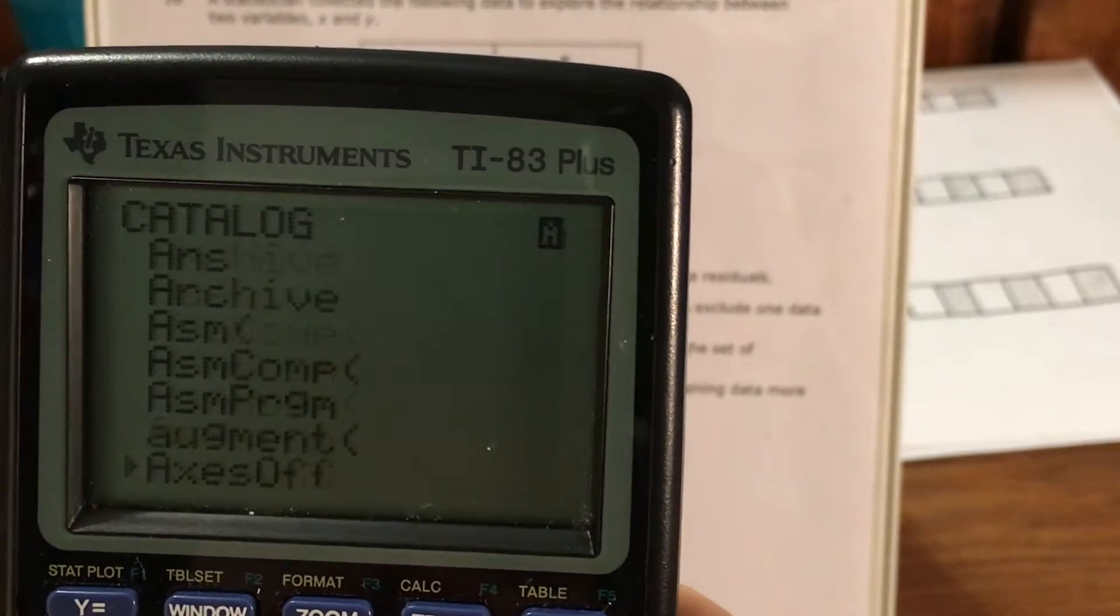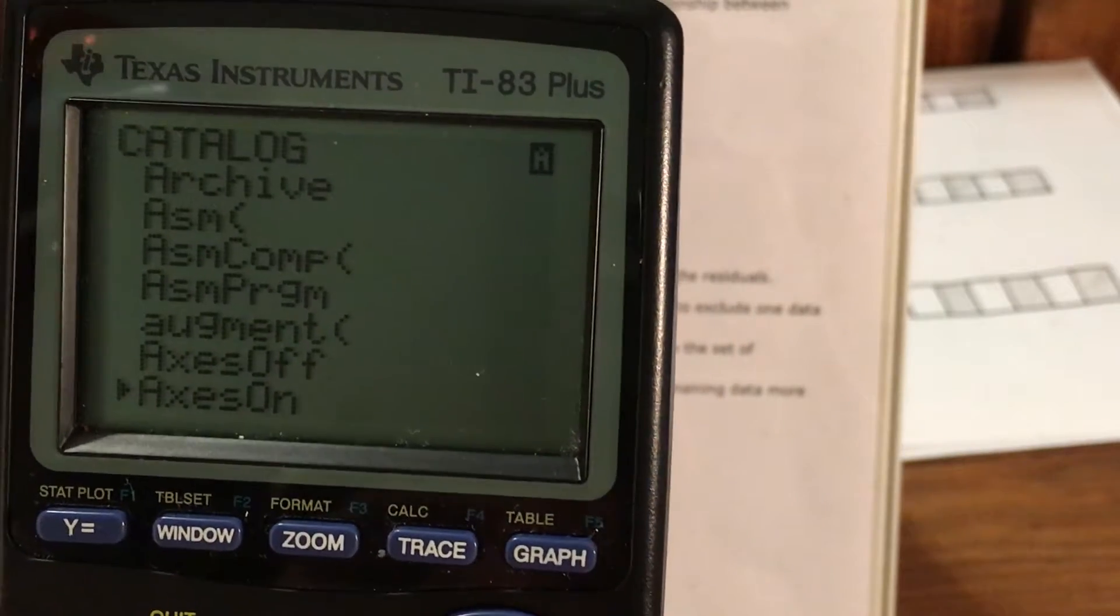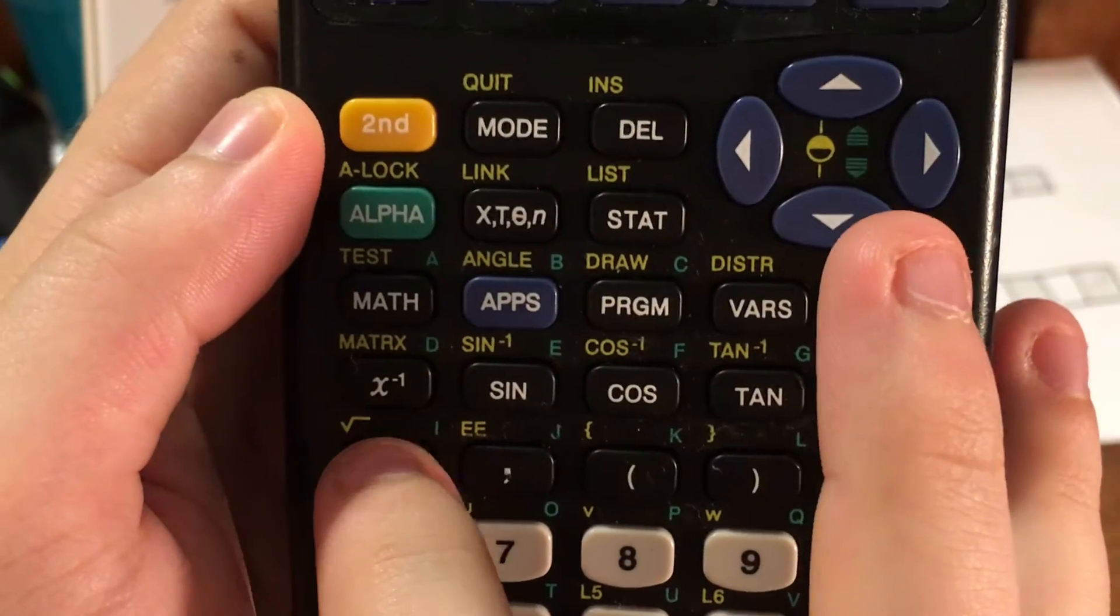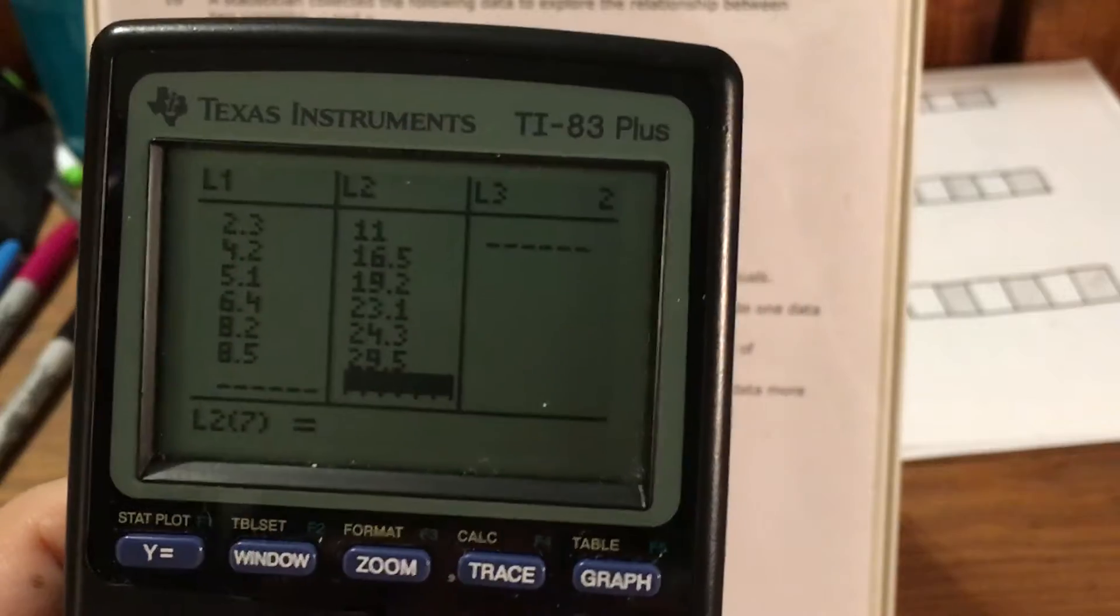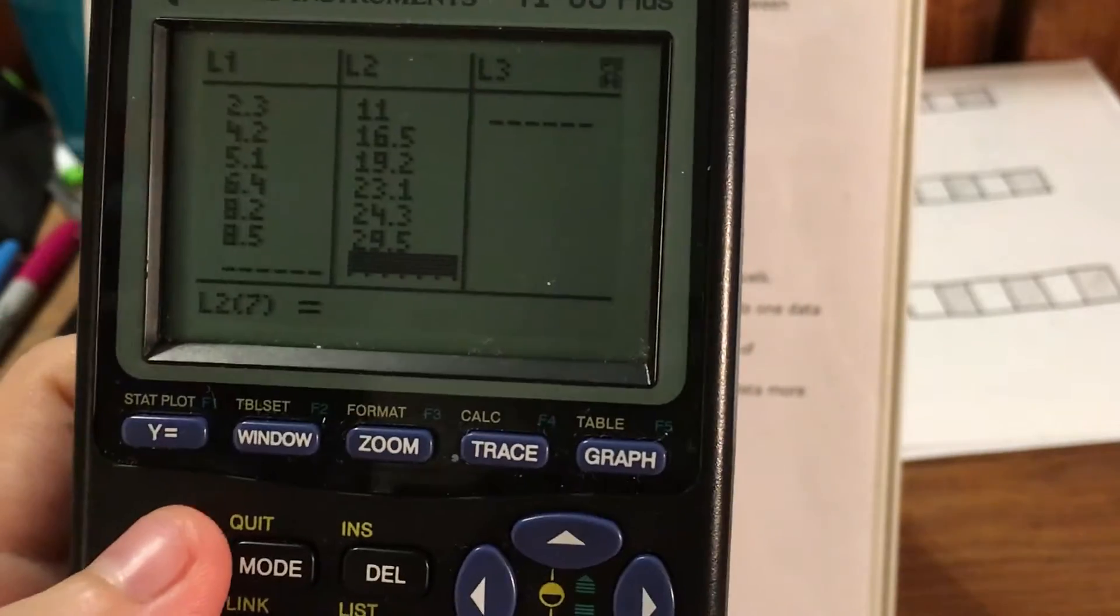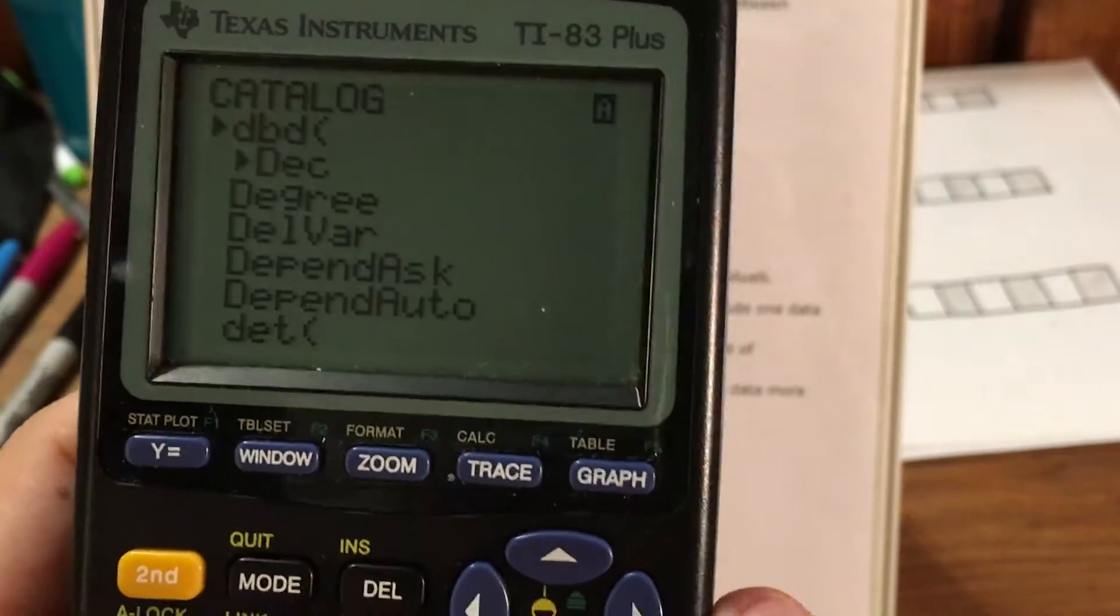And now I can either keep going down or I can type in the letter D, which is in green here above x to the negative 1. Accidentally type that. Go back to catalog. Go back to D. Okay.